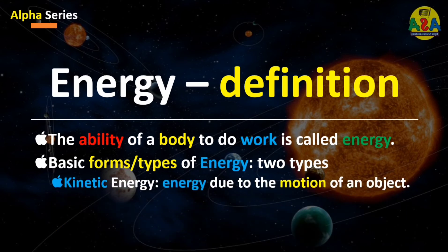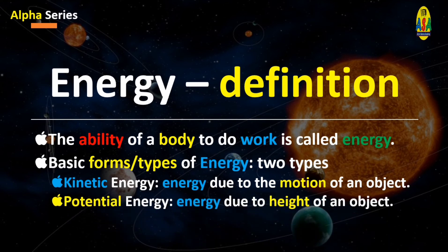and that is the energy due to the motion or movement of an object. And the second one is potential energy, and that is the energy due to the height or position of an object.